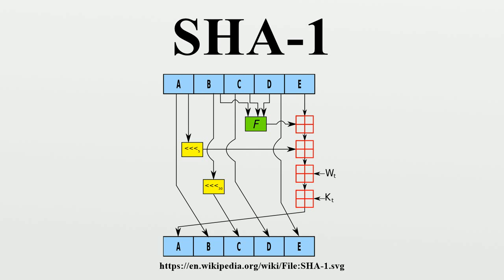SHA-0 is the original version of the 160-bit hash function published in 1993 under the name SHA. It was not adopted by many applications. Published in 1995, SHA-1 is very similar to SHA-0, but alters the original SHA hash specification to correct weaknesses that were unknown to the public at that time.